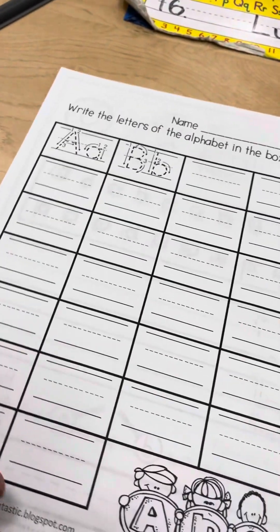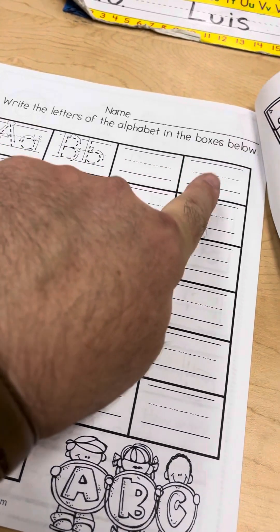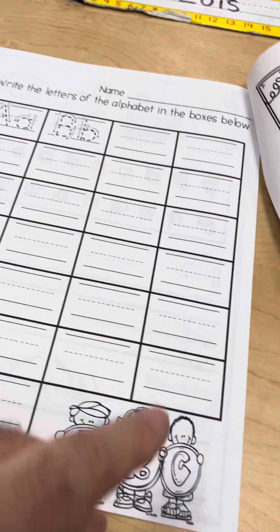Again, they're writing their name and writing how many of that letter they found in their name. Over here, they're going to write the alphabet: A, B, C, D, E, F, G, so on and so forth.